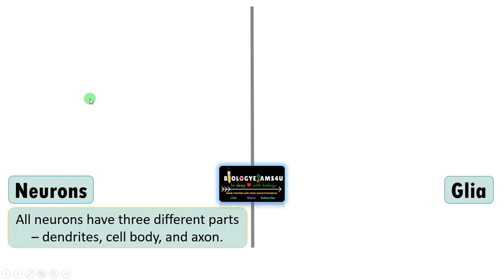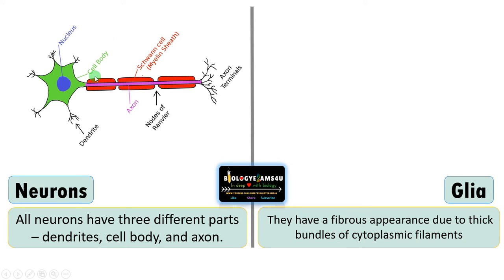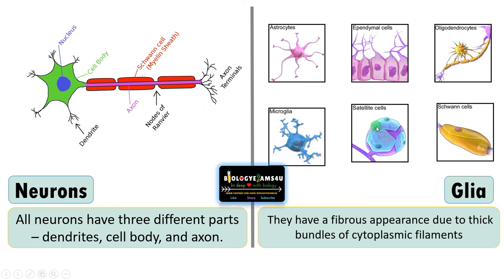The next difference is regarding the structure of neurons and glial cells. All neurons have three different parts: first, the cell body with nucleus and all other organelles like the Golgi apparatus and mitochondria; second, dendrites that receive signals; and third, the axon that sends signals to the next neuron. There are glial cells like Schwann cells that protect this axon and help in transfer of nerve impulses. Different types of glial cells — like astrocytes, oligodendrocytes, and microglial cells — all have a fibrous appearance due to thick bundles of cytoplasmic strands.